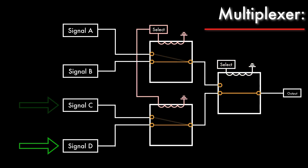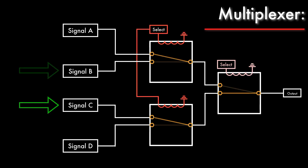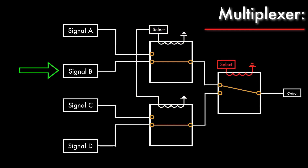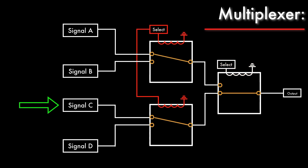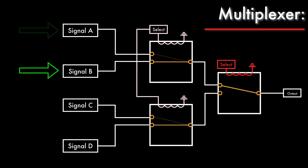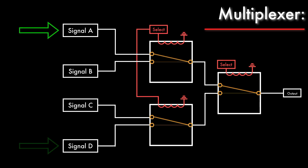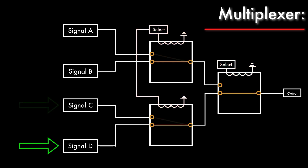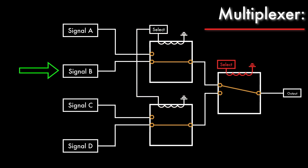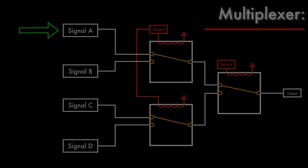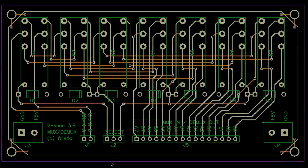We can add a third row of relays with their coils in parallel as well, making an 8-to-1 multiplexer, and so on. We can continue building an arbitrarily large pyramid of relays to multiplex as many signals as we want. But I only need to deal with seven signals from the ALU, so the 8-to-1 multiplexer will suffice.